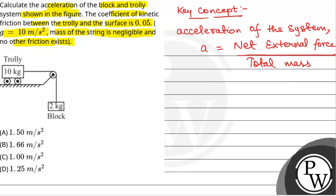Now, here net external force means this weight of the block will be an external force, while tension this is an internal force. If we consider the block and trolley system as a whole, this weight of the force will be external, but tension in the string that will be an internal force, whereas friction that will be acting on the trolley, that is an external force.